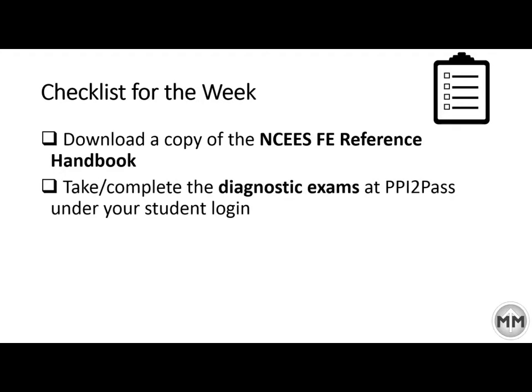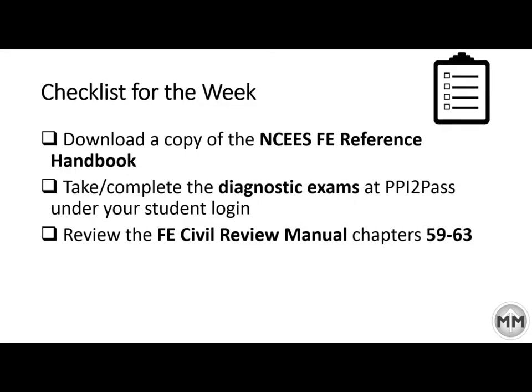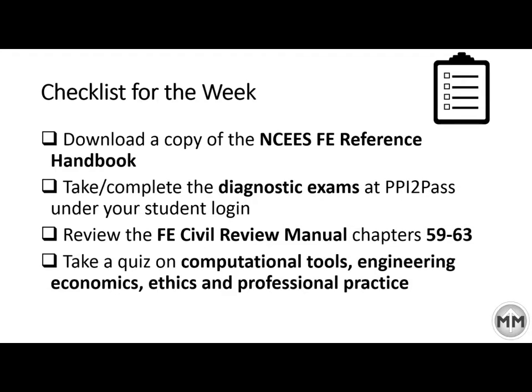Second, if you haven't done this — and a lot of you have not yet — take your diagnostic exam and see where you're at. This is the baseline. Number three, review the FE Civil Review Manual, chapters 59 to 63. You have online access through your PPI account under the Learning Hub. And lastly, take and pass — get at least 50% — on your computational tools, engineering economics, ethics, and professional practice quiz.